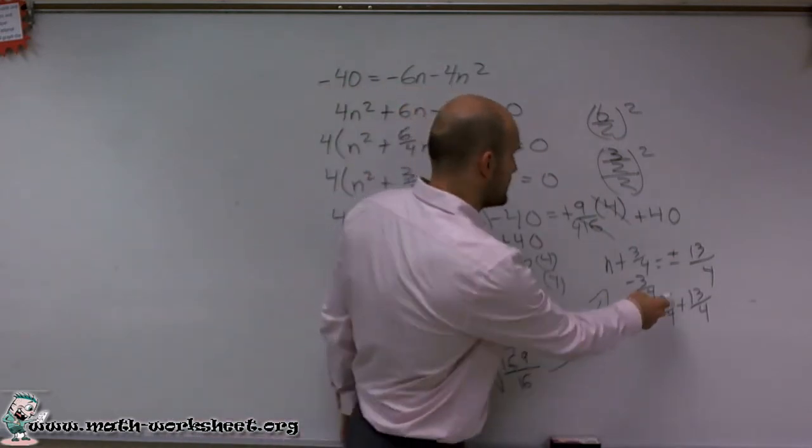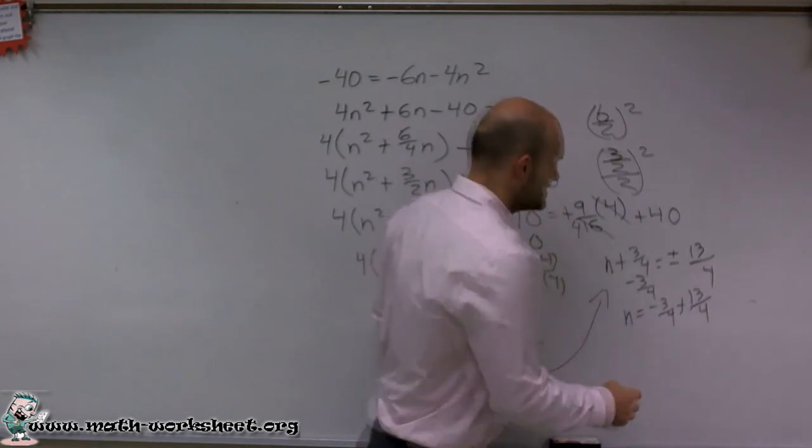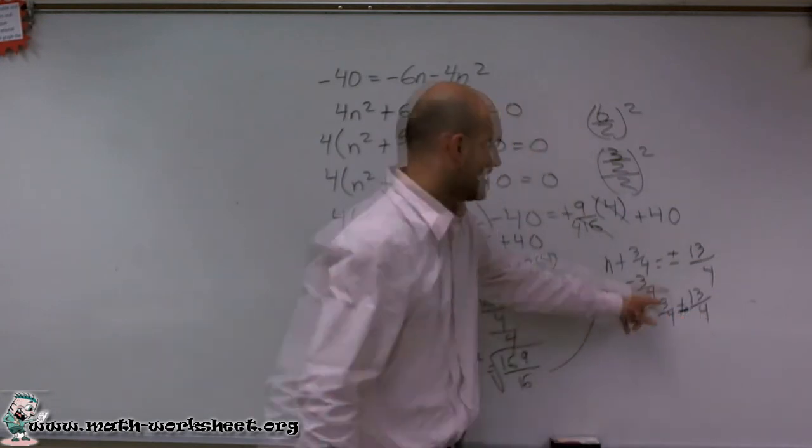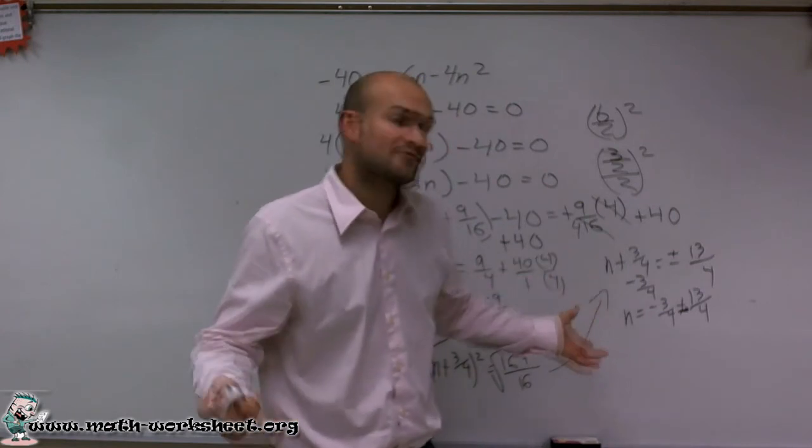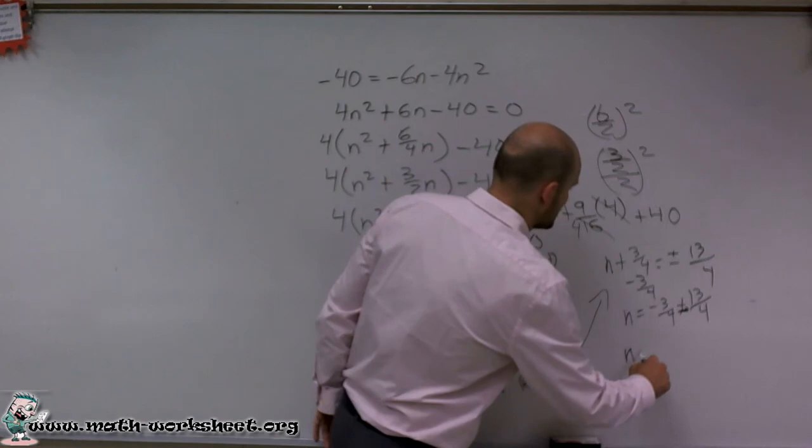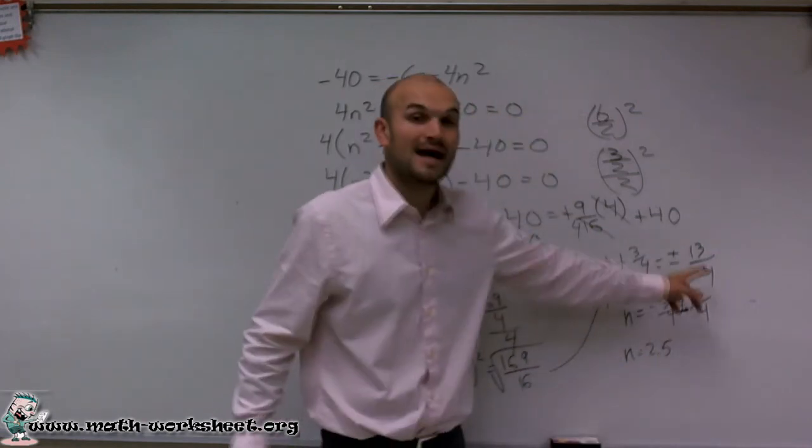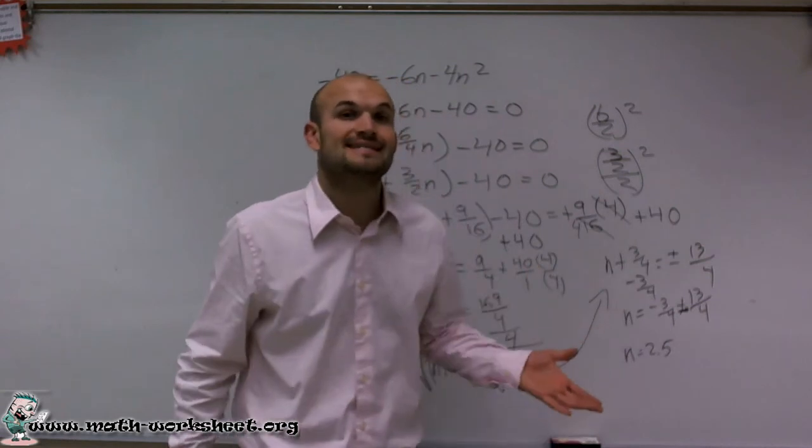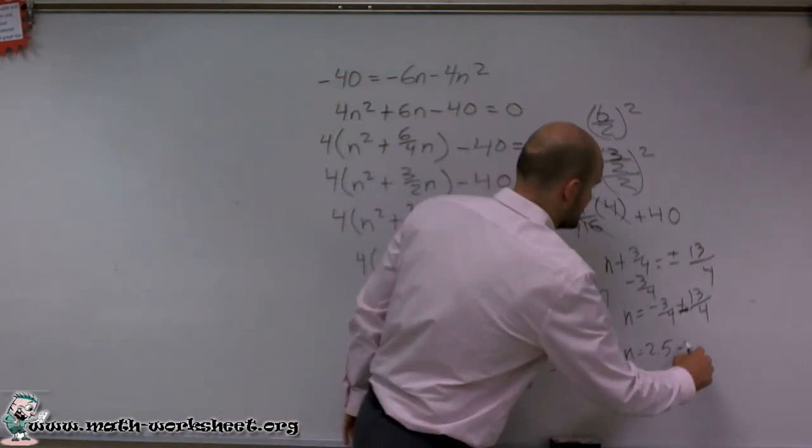And when we complete that, we have negative 3 fourths plus or minus. Negative 3 fourths plus 13 fourths is going to be a positive 10 fourths, which will leave us as n equals 2.5. And then I have negative 3 fourths minus 13 fourths, which will give us a negative 16 fourths, which is going to be a negative 4.